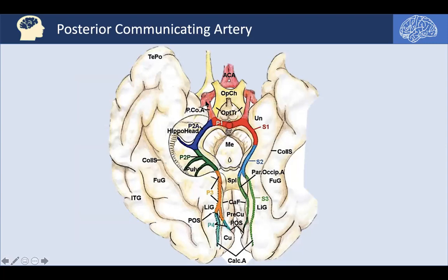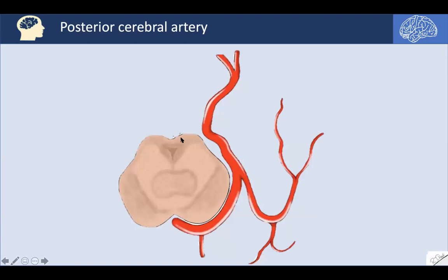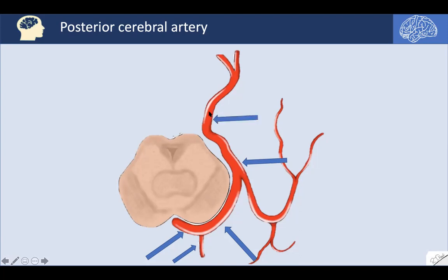In this figure, we show how the posterior communicating artery runs posteriorly from the ICA to join the P1 segment coming from the basilar artery, forming the P2A segment, then continuing as the P2P segment, then the P3 segment, and finally the P4 segment of the posterior cerebral artery. We can also demonstrate the relationship of the PCA course with the midbrain. Here the P1 segment goes from the basilar artery, here is the posterior communicating artery uniting to form the P2A segment, the P2P segment, the quadrigeminal P3 segment, and the cortical P4 segment.